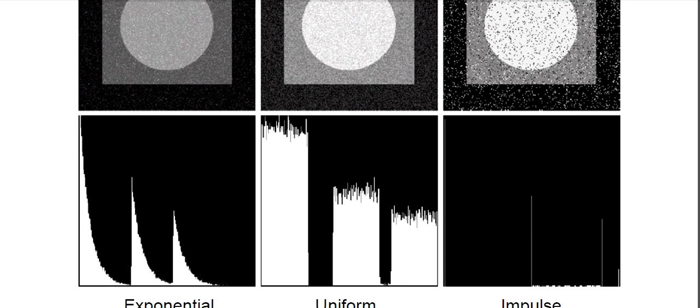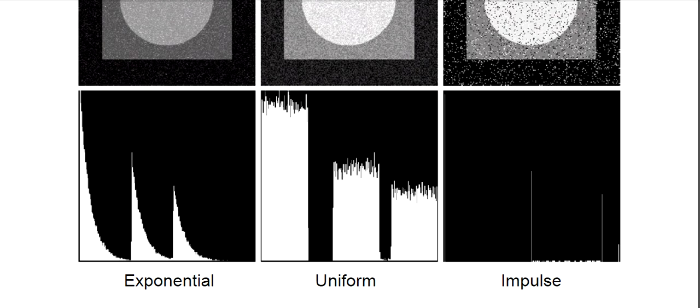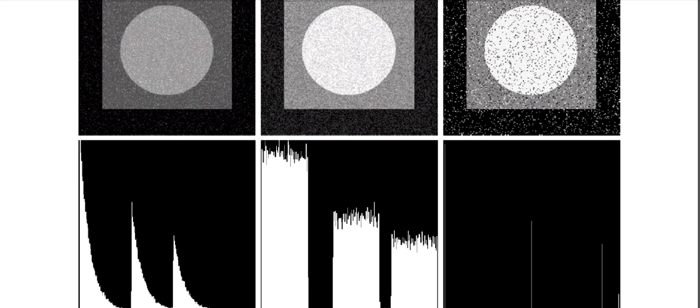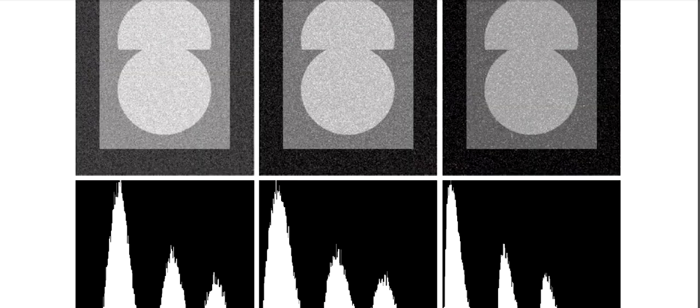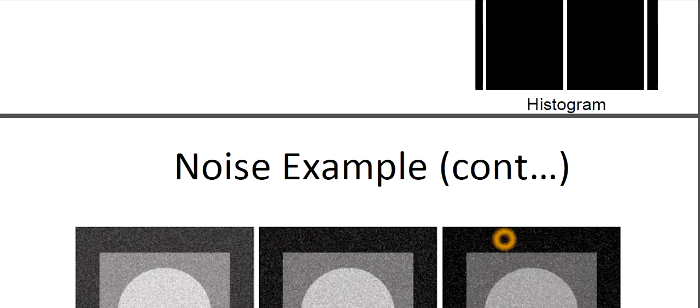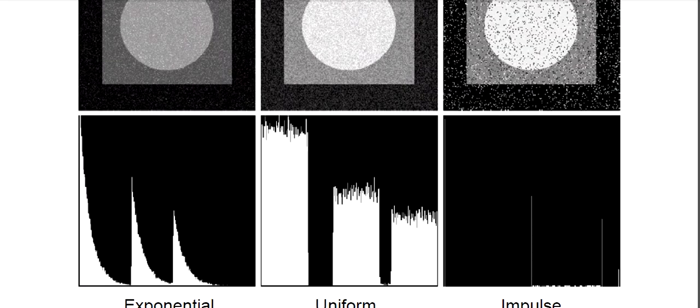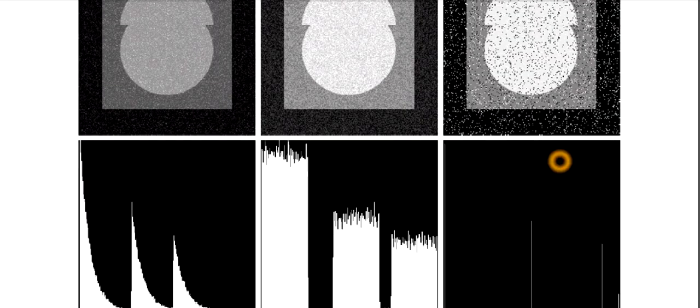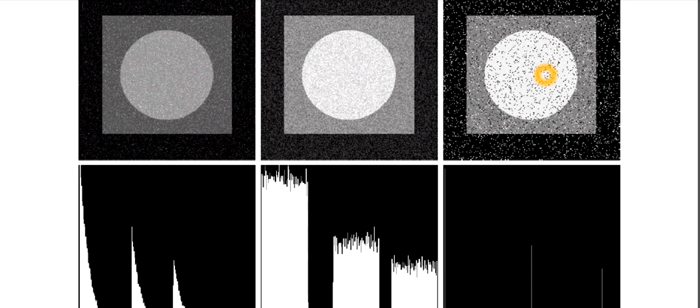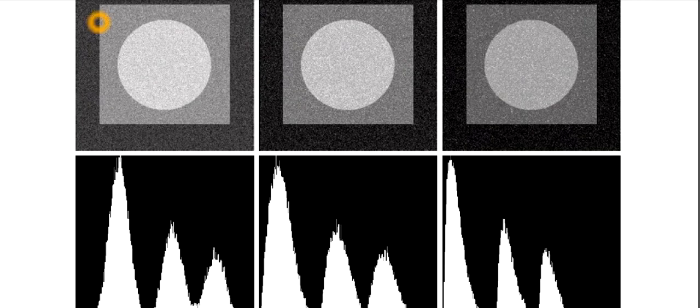You need to know about the variation of the histogram also. In the case of Gaussian, how the curve is flowing. In the case of impulse, how the curve looks like. This is the impulse affected, the salt and pepper noise affected image. And this is the Gaussian.